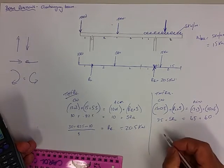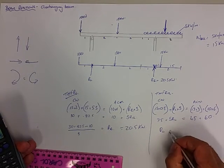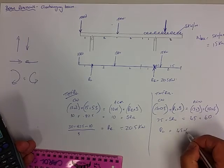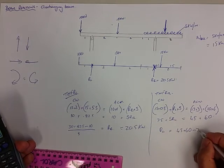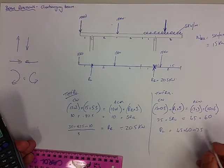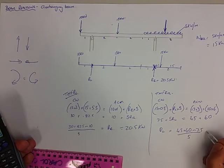Rearrange the formula. So we make RL the subject. RL equals 45 plus 60. The 7.5 goes over becomes a negative 7.5. And the 5 goes over becomes a divide by 5.